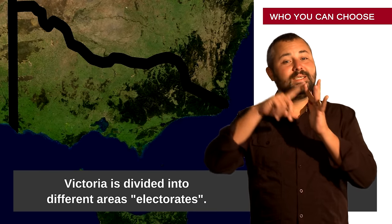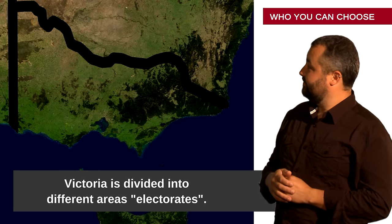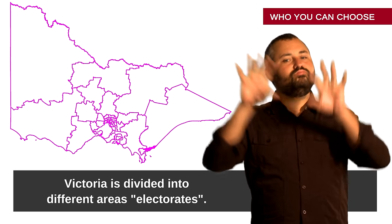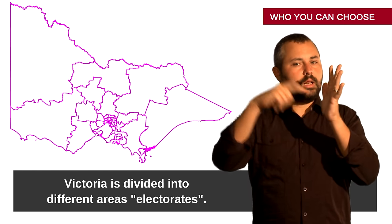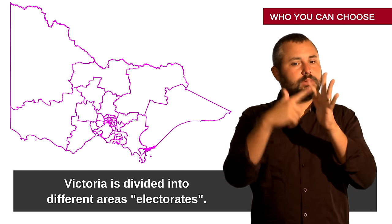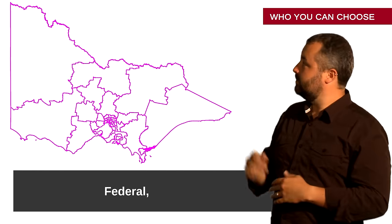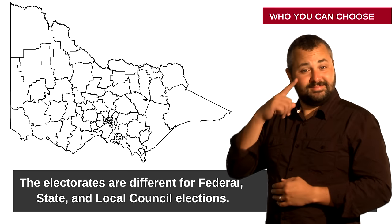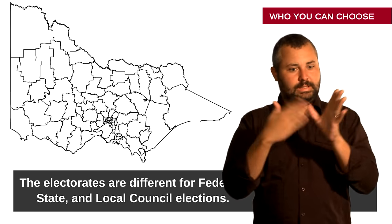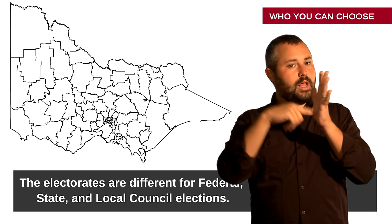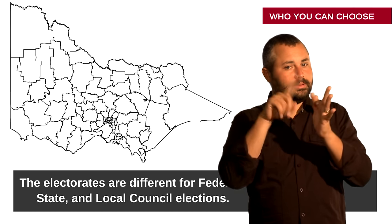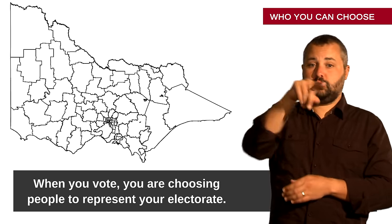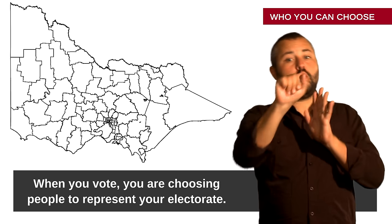Victoria is divided into different areas called electorates — Federal, State, and Local Council. The electorates are different for Federal, State and Local Council elections. When you vote, you're choosing people to represent your electorate.